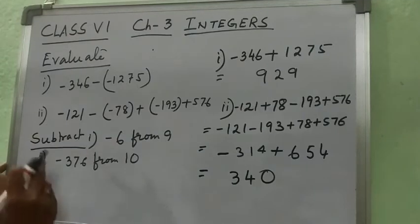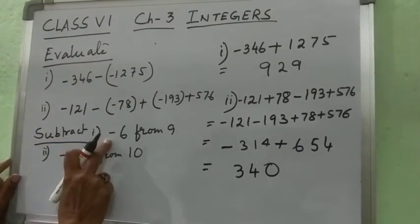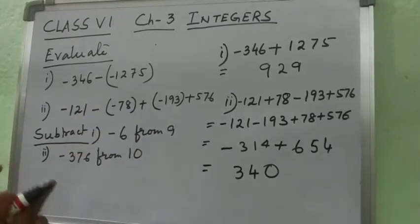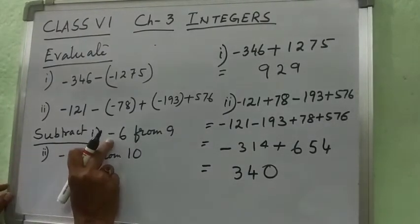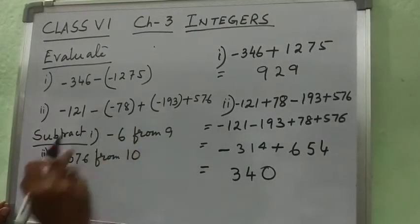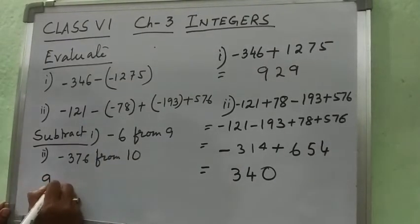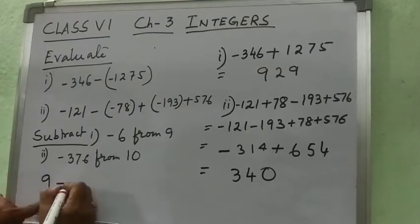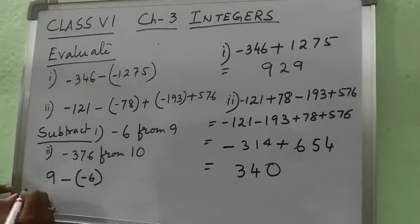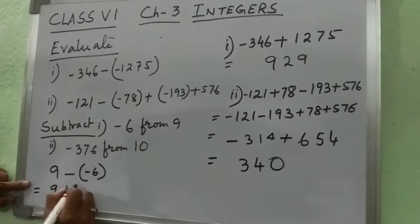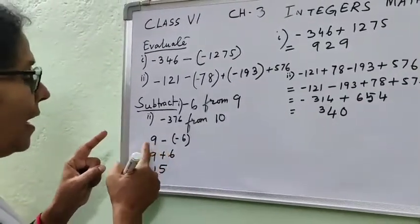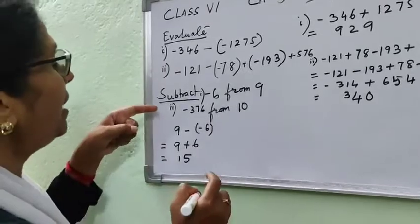Next question is subtraction: subtract minus 6 from 9. Children, you are making a mistake by writing minus 6 first then minus 9 — that is absolutely wrong. What you have to do: 'from 9' means 9 comes first. From 9 you are going to subtract minus 6, so write 9 minus, then minus 6 within the bracket. Now: 9 minus minus becomes plus 6. Both digits are positive, so you have to add and the answer comes 15.